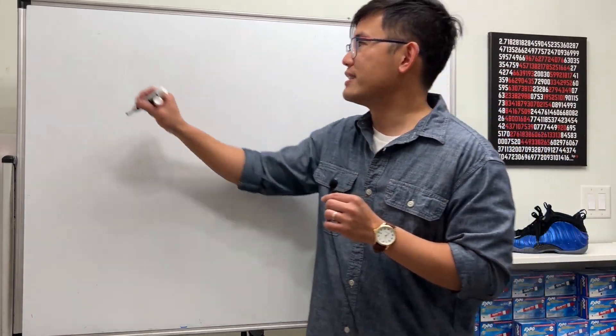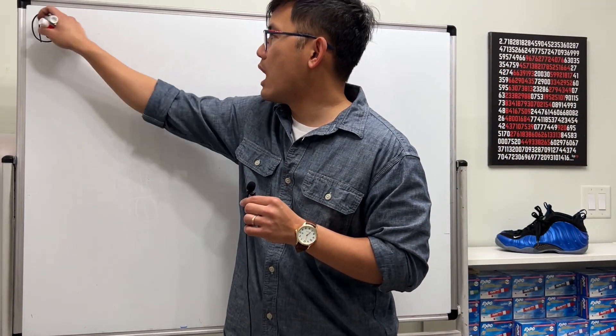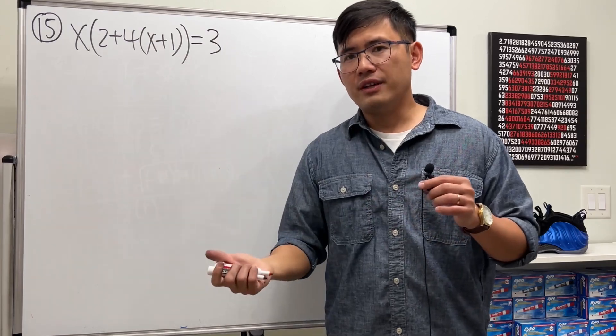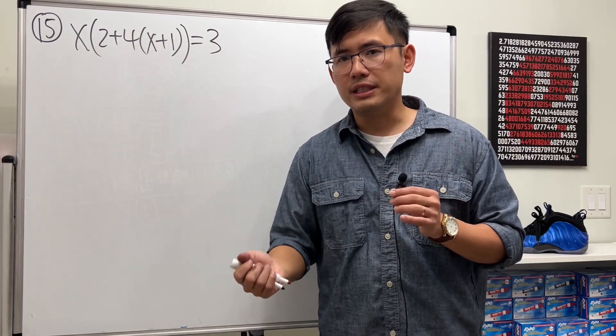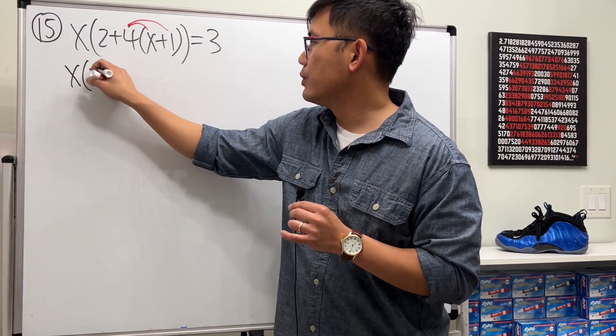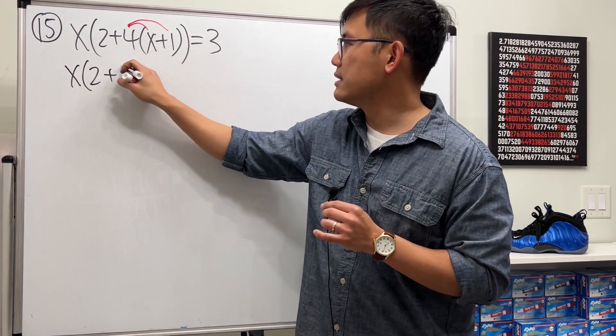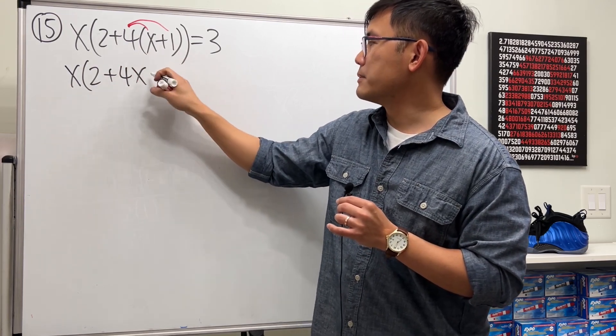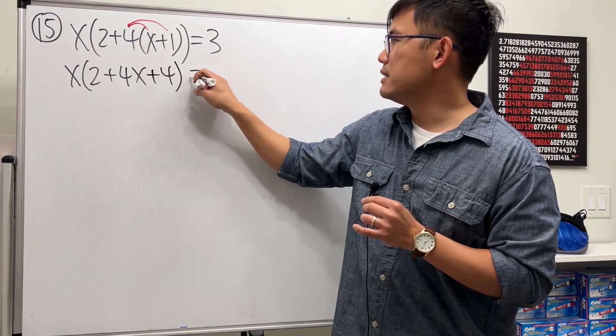Alright, number 15 is my favorite, you guys will see why. So we have a parenthesis instead of another, but don't worry, just do this inside out. We will distribute this first, so we get x times 2 plus 4 times x is 4x, and then 4 times 1 is 4, and this is equal to 3.